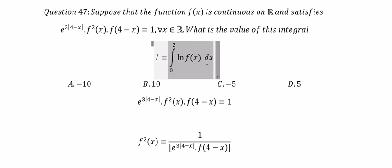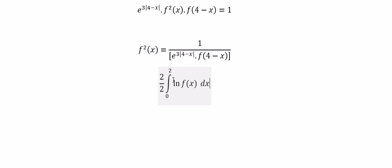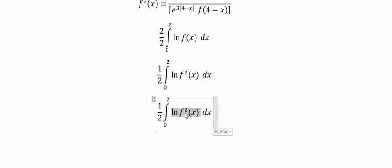Next, we have the integral, so we put the 2 divided by 2. We put number 2 back for f of x, so you will get the power in here. We get ln of f of x squared. We know that this is similar to the other form, so we just change to f of x squared.